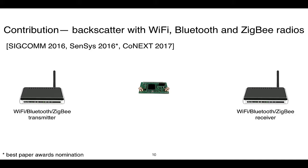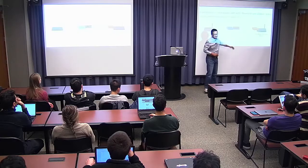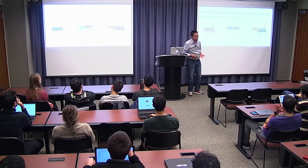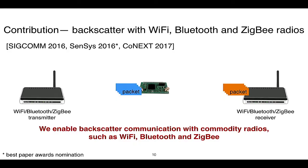Our key contribution is that we built a practical system able to do data communication on top of Wi-Fi, Bluetooth, and ZigBee traffic. In our system, a transmitter — which can be a Wi-Fi, Bluetooth, or ZigBee device — transmits packets. These packets are reflected by a special device we designed to a receiver. During the signal reflection, our device injects its own data on top of the reflected packets. More importantly, the reflected packet is still a valid packet receivable by commercial receivers.